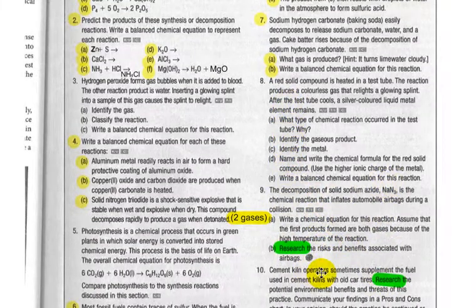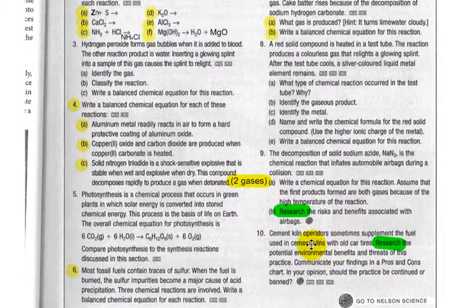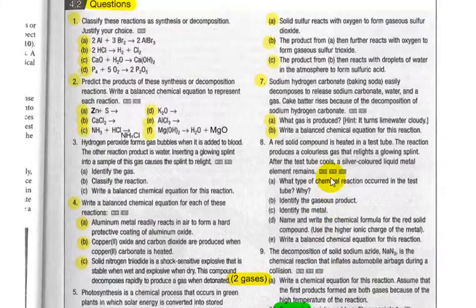Just a little hint though. Number nine and ten, there are researches there for later on in the course. One involves airbags using solid sodium azide. And talking about earlier about cement kilns, we can look at using tires basically as fuel for cement kilns. What are some of the advantages and disadvantages of that? You can look up that if you choose to.